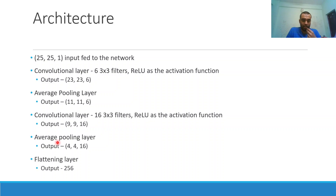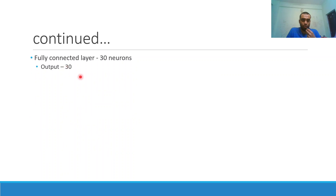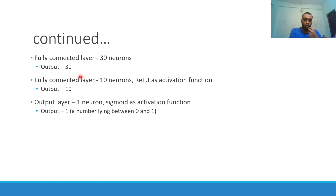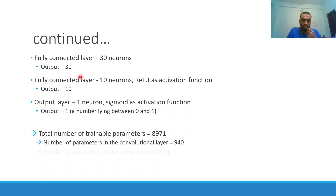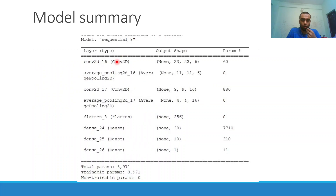After the pooling layers, a flattening layer is applied. Flattening 4x4x16 gives 256 values. The first dense layer has 30 neurons taking 256 inputs, the next dense layer has 10 neurons, and the output layer has one neuron using sigmoid as activation. The total number of trainable parameters is around 9,000 — about 1,000 in the convolutional layers and 8,000 in the dense layers. The overall model has two convolutional layers, two average pooling layers, one flattening layer, and three dense layers.